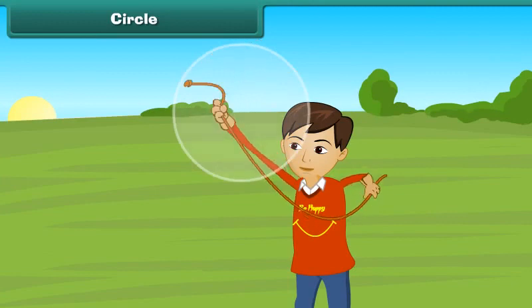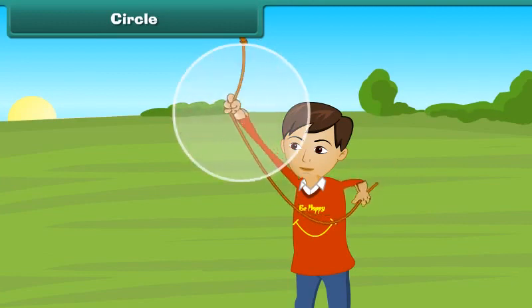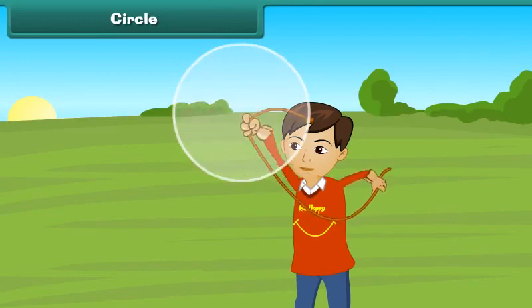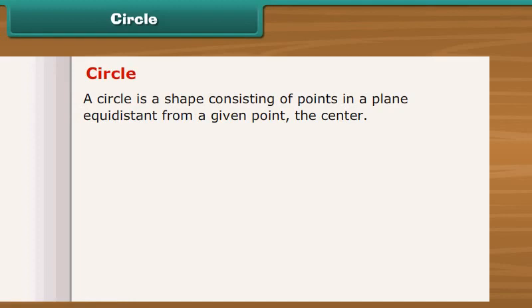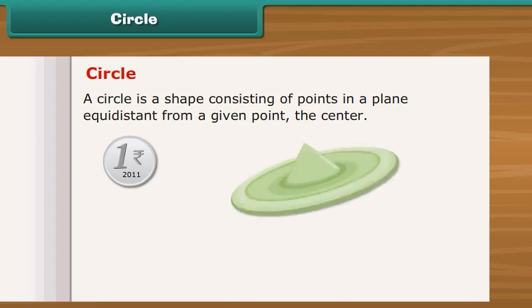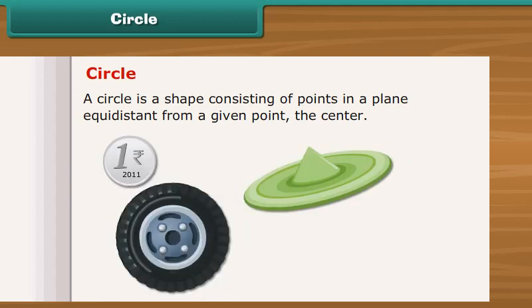Look what Sahil is doing. He is rotating the rope in the air. What shape the knot at the end of the rope is forming? It is circle. A circle is a shape consisting of points in a plane equidistant from a given point, the center. One rupee coins, flying desk, wheel, CD are circular in shape.